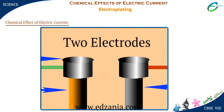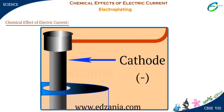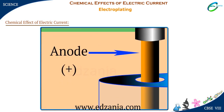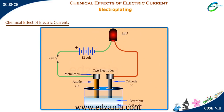Dip the carbon rods in an electrolyte — that is, salt water — and connect the key. The conducting carbon rods connected to the battery and immersed in the electrolyte are called electrodes. The electrode connected to the negative terminal of the battery is called cathode, whereas the electrode connected to the positive terminal is called anode. When we complete the circuit, electric current flowing through a liquid induces a chemical reaction in it.